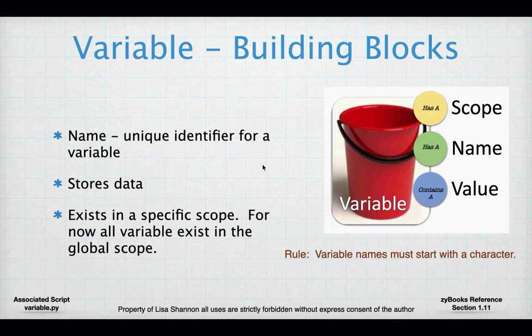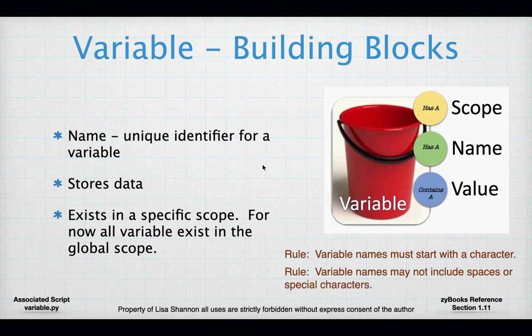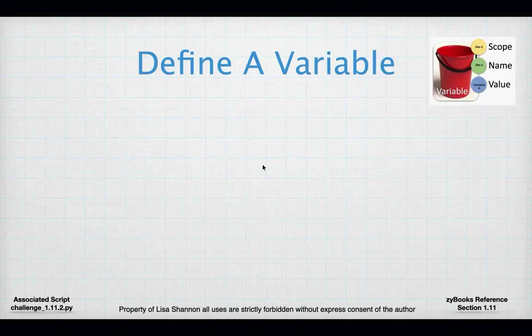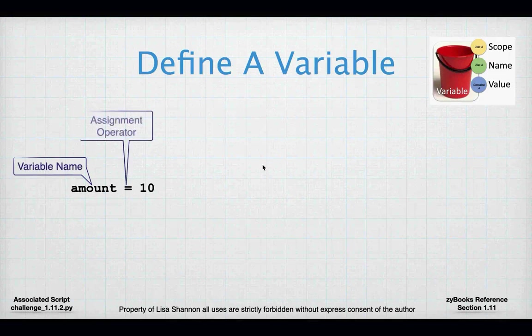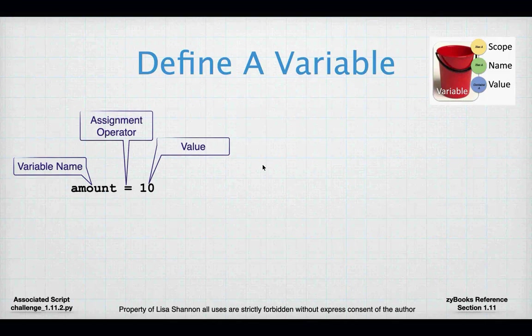A variable name has to start with a character, and you cannot have special characters in a variable name. You can't have an exclamation point, a space, or a pound sign — it's alphanumeric, letters and numbers only. A variable is just a word — in this case the word 'amount' — that's the variable name. It could have been 'Fred', could have been 'Chair', anything that starts with a character and doesn't have special characters.